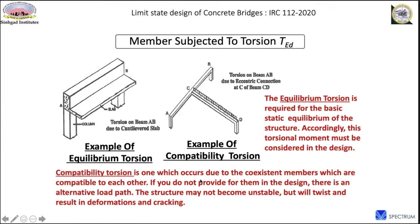For compatibility torsion, even if you do not design the beam for torsion, it will just crack and there will be a redistribution of bending moments within the grid and it will stabilize. If you don't provide torsion design, there is an alternative load path and the structure may not become unstable, but it will twist, resulting in deformation and cracking. For equilibrium torsion, the torsion-induced shear in the webs can be combined with the vertical shear using the same variable strut angle procedure.